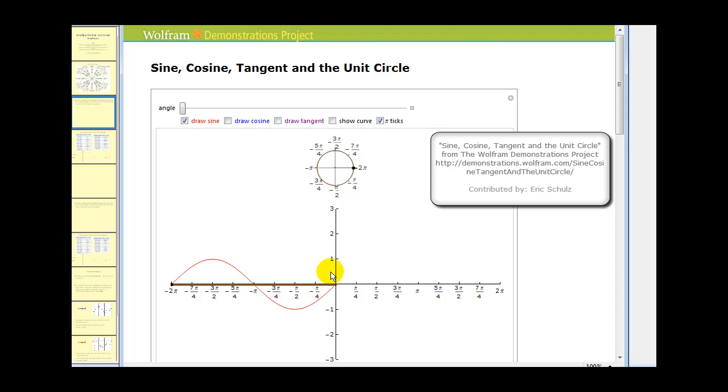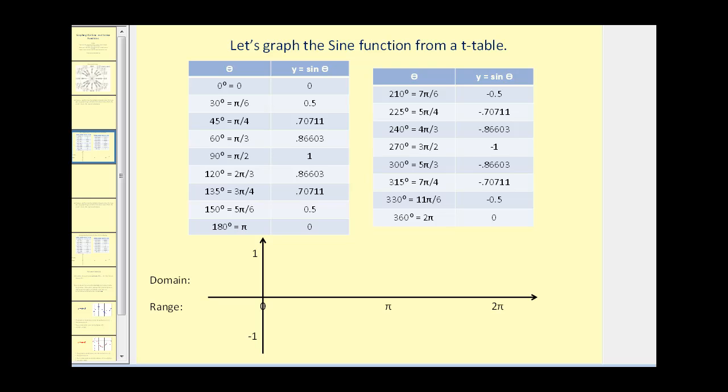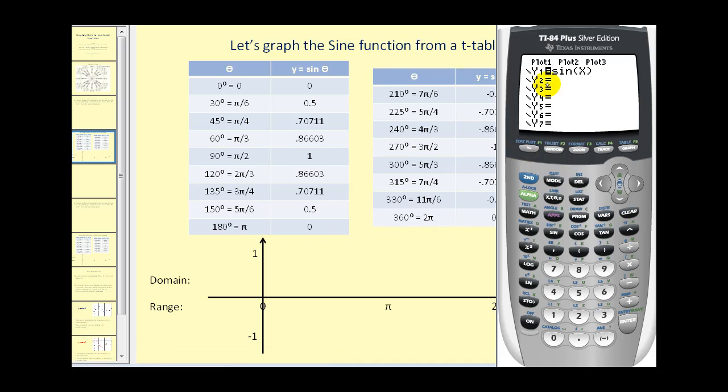If we're going to do this by hand, what would be helpful is to look at the decimal values of this function at different angles. And I've already filled out this table from the calculator. But let me show you how I did that. First thing we have to do is type in our function into y one. I've already done that.